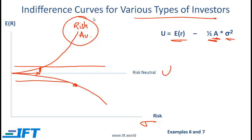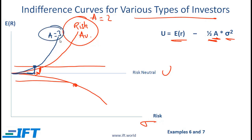Let's say one investor has a risk aversion equal to 2 and another has a risk aversion equal to 3. The investor with higher risk aversion has steeper indifference curves, because to take on a certain amount of risk he needs greater compensation in terms of higher return. An investor who is not very risk averse will have less steep indifference curves.